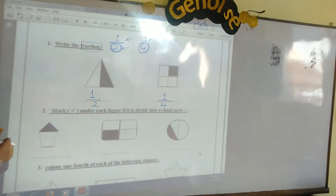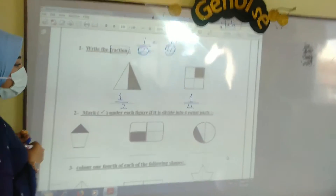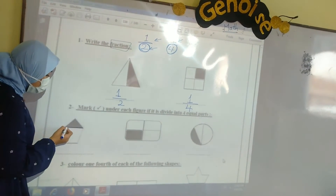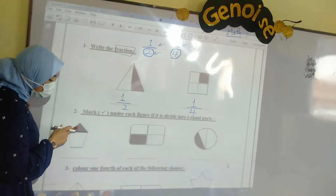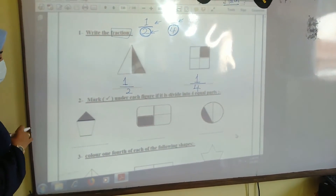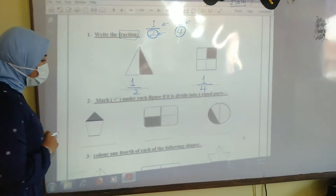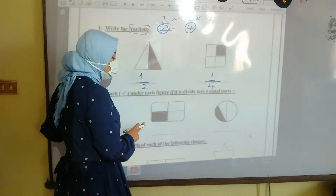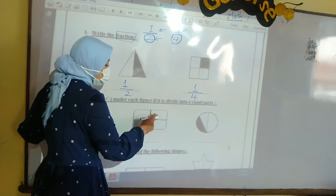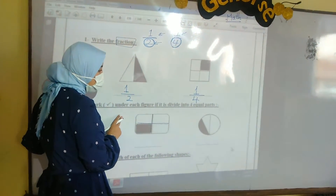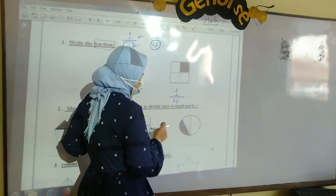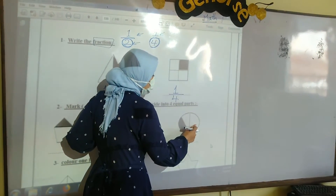Mark right under each figure if it is divided into 4 equal parts. Because the first shape here — the colored part here is not equal. So here it's not divided into 4 equal parts. Here we have a rectangle. It's divided into 4 parts. Yes, we have 2 lines that divide this shape into 4 equal parts, so I will mark right. Here we have a circle, it's divided into 3 equal parts, not 4, so here we can't mark right.